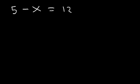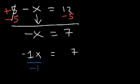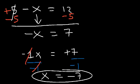Try this one: 5 minus x is equal to 12. We need to move the 5 from the left side to the right side, so let's subtract both sides by 5. So negative x is equal to 12 minus 5, which is 7. Negative x is the same as negative 1 times x. If we divide both sides by negative 1, we get positive x on the left side. Positive 7 divided by negative 1 gives a negative number, so x is equal to negative 7.